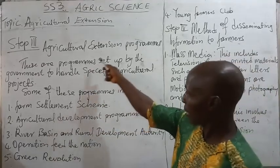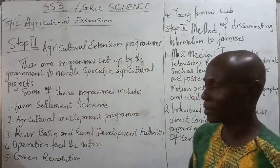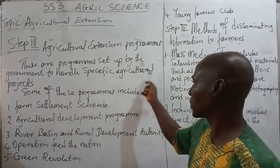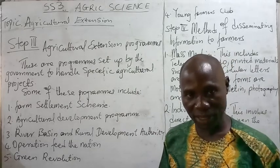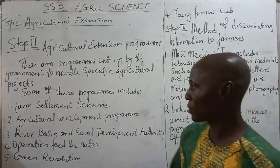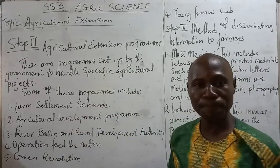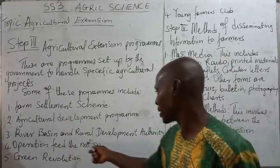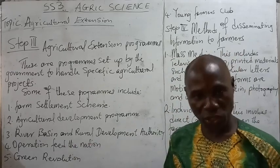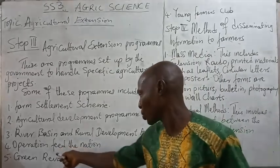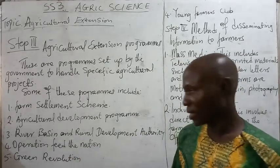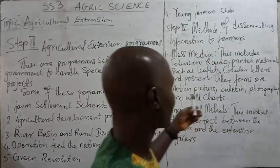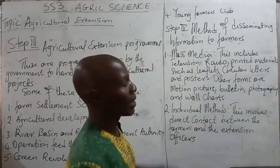Next is agricultural extension programs. These are programs set up by the government to handle specific agricultural projects. Examples include: farm settlement scheme, agricultural development program, River Basin and Rural Development Authority, Operation Feed the Nation, Green Revolution, and Young Farmers Club.